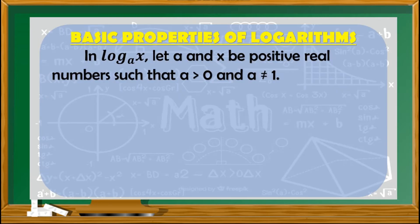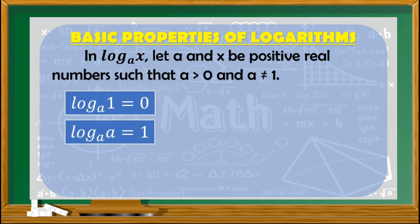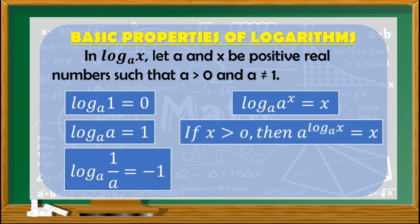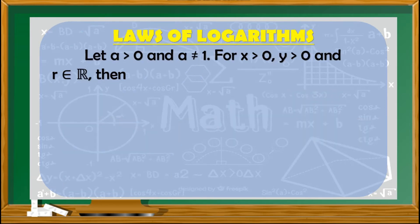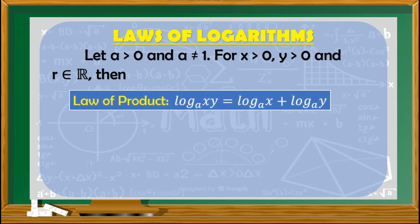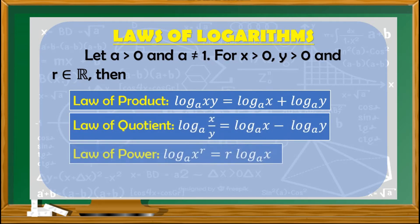Let's go back to the basic properties of logarithms. In logarithm of x with base a, let a and x be positive real numbers such that a is greater than 0 and a not equal to 1. Next, let us have the laws of logarithms. Let a be greater than 0 and a not equal to 1. For x greater than 0, y greater than 0, and r is any real number, we have the law of a product, law of a quotient, and law of a power. These basic properties and laws of logarithms are needed in solving logarithmic equations.